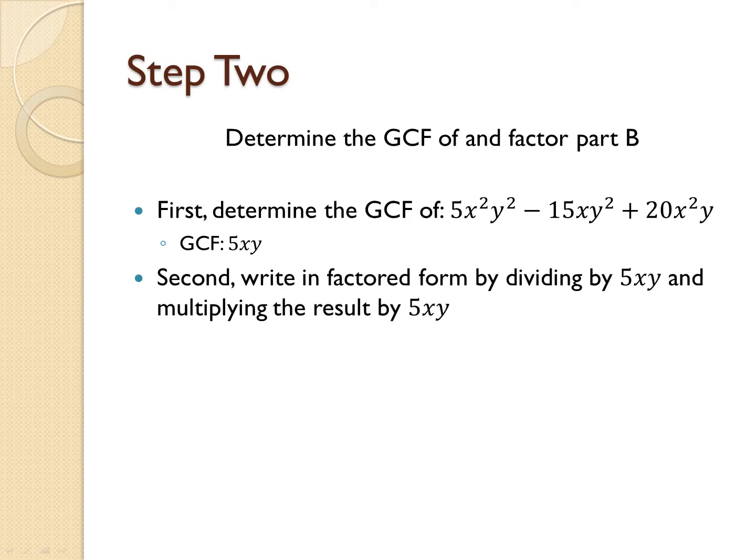So now, we're going to divide everything by 5xy and then multiply that result by 5xy to get our factored form, which after we've done our setup and our division, we'll wind up with a result of xy minus 3y plus 4x.